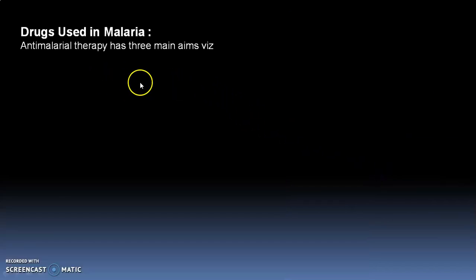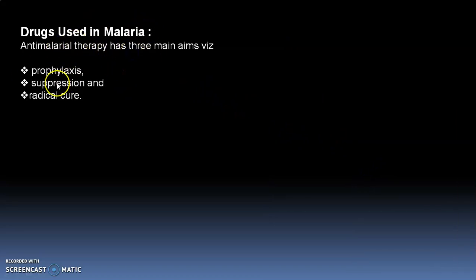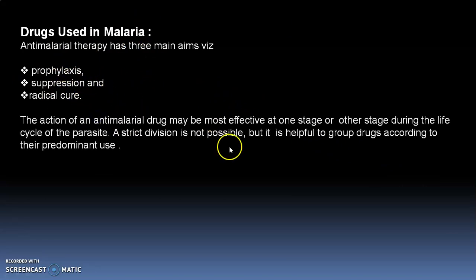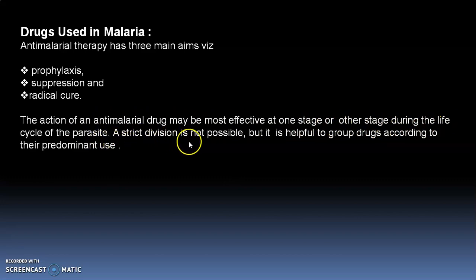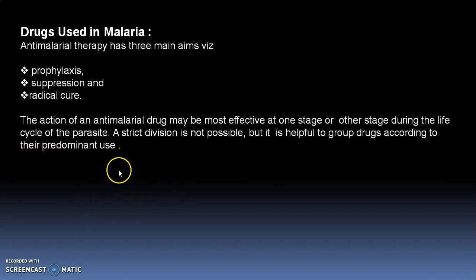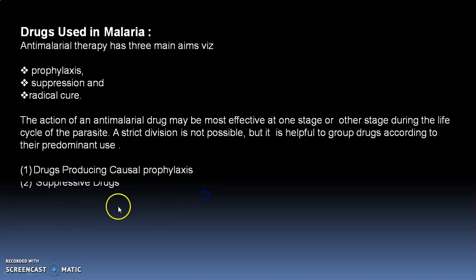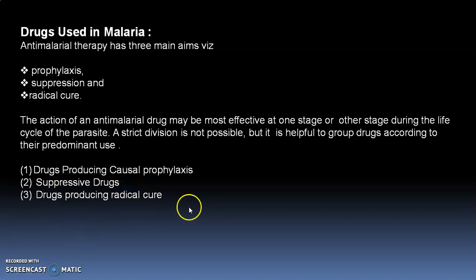Antimalarial therapy has three main aims: prophylaxis, suppression, and radical cure. The action of an antimalarial drug may be most effective at one stage or another during the life cycle of the parasite. A strict division is not possible, but it is helpful to group drugs according to their predominant use — drugs producing causal prophylaxis, suppressive drugs, and drugs producing radical cure.